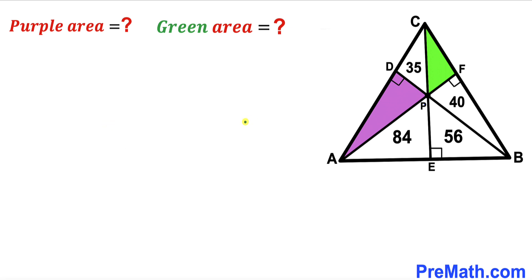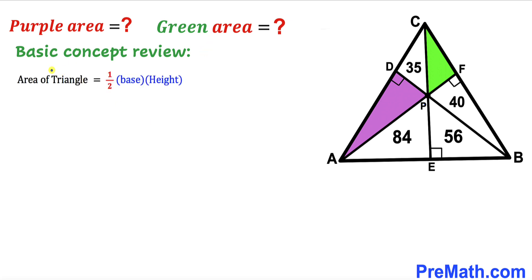Let's go ahead and get started. Before we proceed any further, let me go over the basic concept review. Let's recall the area of a triangle formula: area is always equal to one half times the base times the height.